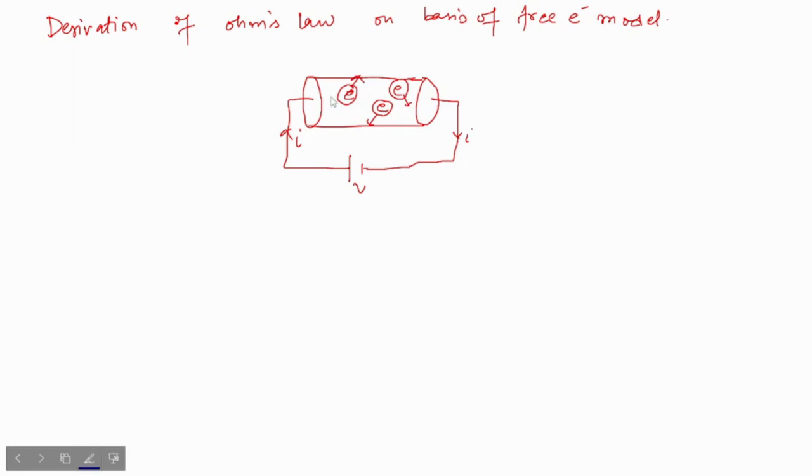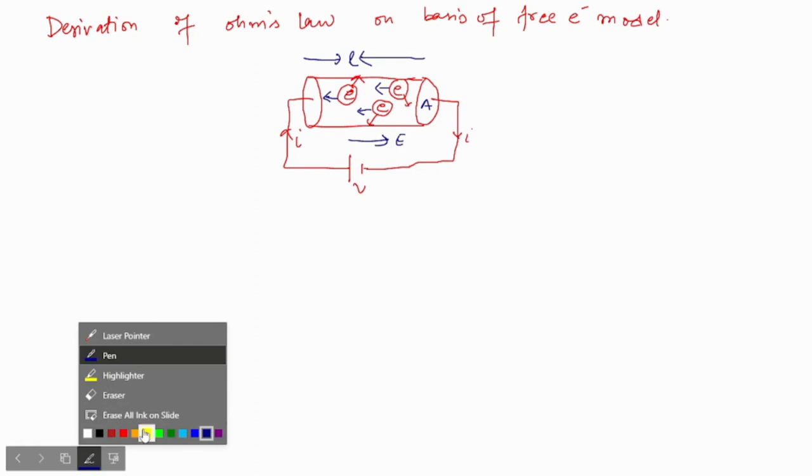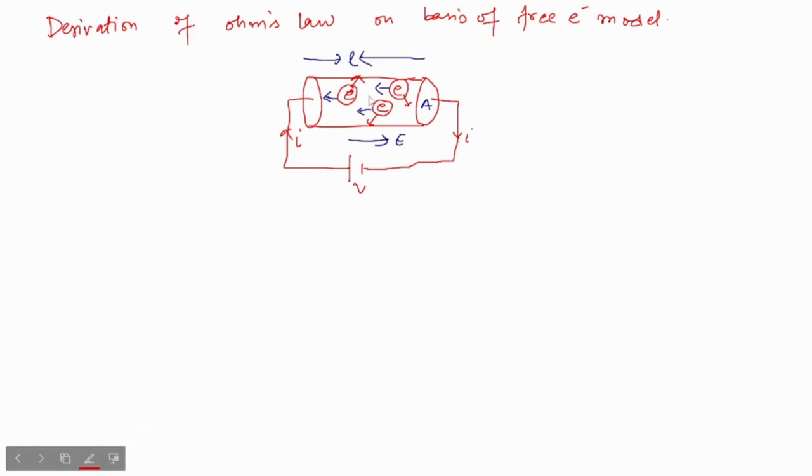They will experience a force. Suppose an electric field is generated in this direction. The length of conductor is L, the area is cross-sectional area A. Let's say their random movements are somewhat like this. There are n number of electrons.